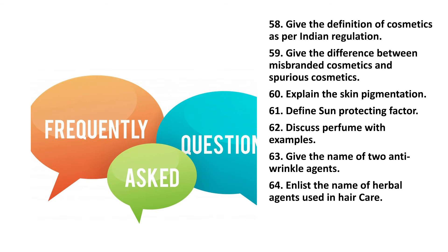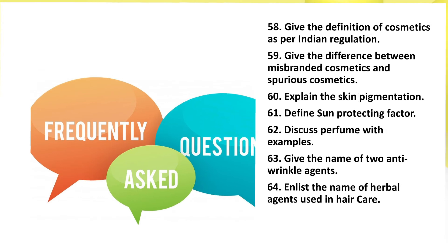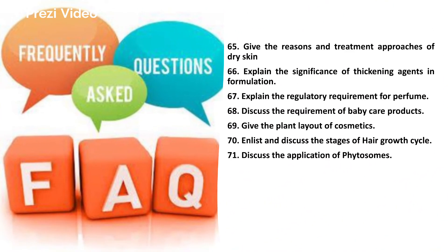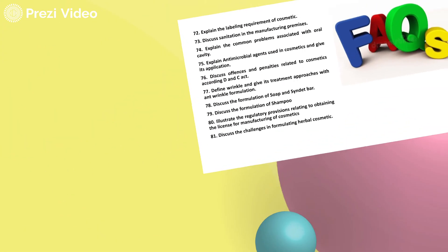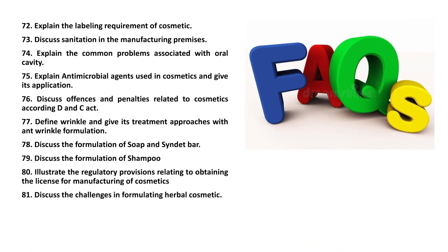Final set of important questions: give the definition of cosmetics as per Indian regulation; give the differences between misbranded cosmetics and spurious cosmetics; explain skin pigmentation; define sun protecting factors; discuss perfume with examples; give the names of two anti-wrinkle agents and list the names of herbal agents used in hair care; give the reasons and treatment approaches of dry skin; explain the significance of thickening agents in formulation; explain the regulatory requirements for perfume; discuss the requirements of baby care products; give the plant layout of a cosmetics plant and discuss the stages of hair growth cycle; discuss the application of phytosomes; explain the labeling requirements of cosmetics; discuss sanitation in manufacturing premises; explain the common problems associated with the oral cavity; explain antimicrobial agents used in cosmetics and their applications; discuss offenses and penalties related to cosmetics according to D&C Act; define wrinkle and its treatment approaches with anti-wrinkle formulations; discuss the formulation of soaps and scented bars; discuss the formulation of shampoos; illustrate the regulatory provisions related to obtaining the license for manufacturing cosmetics; discuss the challenges in formulating herbal cosmetics.